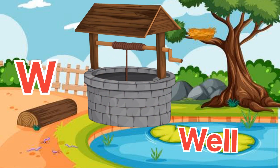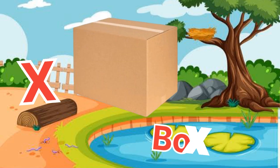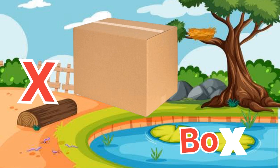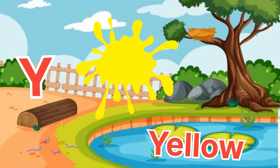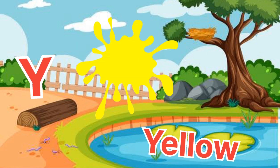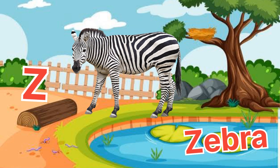W for well, X for box, Y for yellow, Z for zebra.